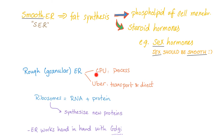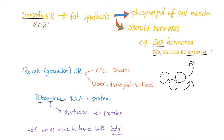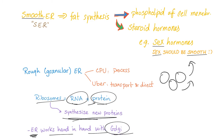The rough endoplasmic reticulum is the central processing unit — it processes and transports vesicles, which are proteins. It will transport them to the Golgi apparatus, as we'll see. Ribosomes are RNA plus proteins. They synthesize new proteins, called protein translation. The endoplasmic reticulum works hand-in-hand with the Golgi.